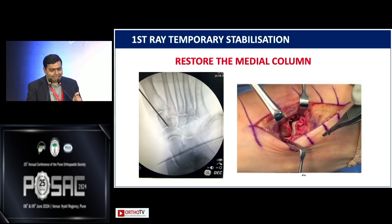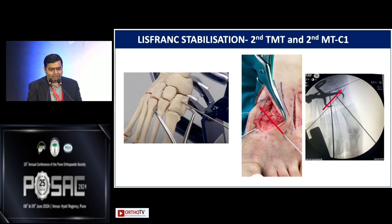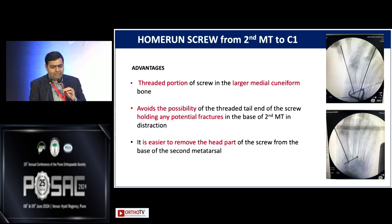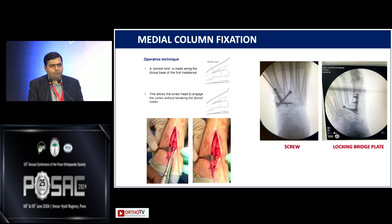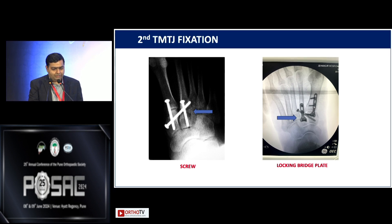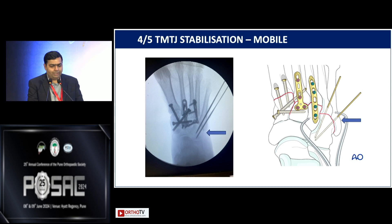The first step is intercuniform stabilization with a positional screw from the medial to middle cuneiform. Next, stabilize the medial column as a strut for fixing the Lisfranc joint. Use a reduction clamp to reduce the Lisfranc joint, then stabilize the second TMT and Lisfranc joint with a screw from the base of the second metatarsal to the medial cuneiform — this trajectory is preferred as the threaded portion sits in the larger medial cuneiform for better purchase. Then fix the medial column with screws or locking plates, the middle column with screws or plates, and finally apply flexible fixation to the lateral column using K-wires.